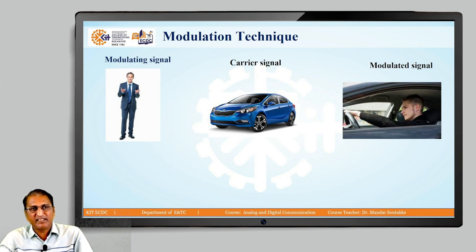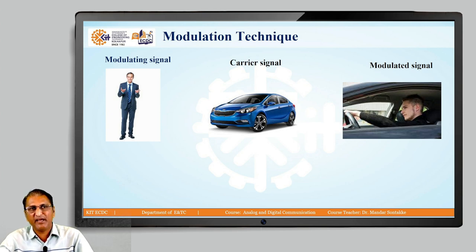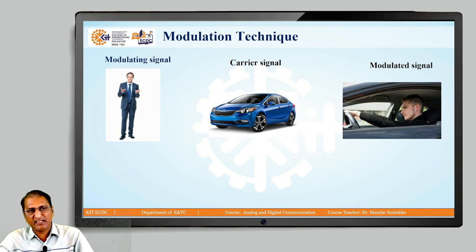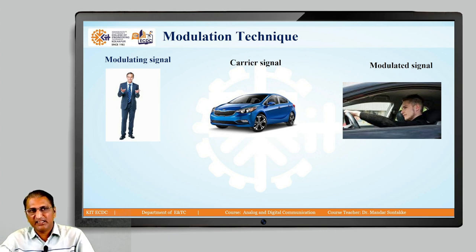Modulation technique: the modulating signal is like a person who cannot walk more than 1 or 2 kilometers, so he takes the help of a carrier — like a car — and when he sits in the car it becomes the modulated signal. Modulating signal is the original information or baseband or low frequency signal. The carrier signal is also called as radio frequency signal or high frequency signal. When we take the help of the carrier, the signal becomes modulated, and this technique is called modulation technique.